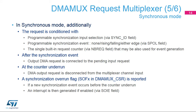In synchronous mode, additionally, the request is conditioned with a programmable synchronization input selection via the SyncID field, a programmable synchronization event — none, rising, falling, or either edge via the SPOL field — and the single built-in request counter via the NBREQ field, which may also be used for event generation. After the synchronization event, the output DMA request is connected to the pending input request. At counter underrun, the DMA output request is disconnected from the multiplexer channel input. A synchronization overrun flag (SOFX) in DMA-MUX CSR is reported if a new synchronization event occurs before the counter underrun, and an interrupt is generated if enabled via the SOIE field.